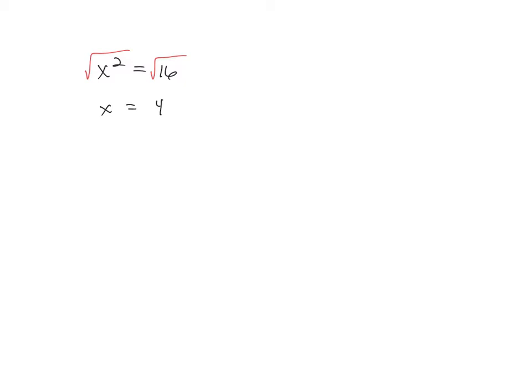You might be thinking: the square root of 16 is four, so how are there two solutions? The definition of a square root is a number times itself. Four times four is 16, but so is negative four — negative four times negative four is also 16. So when solving an equation with a square root, we're going to put positive four and negative four. So it has two solutions.